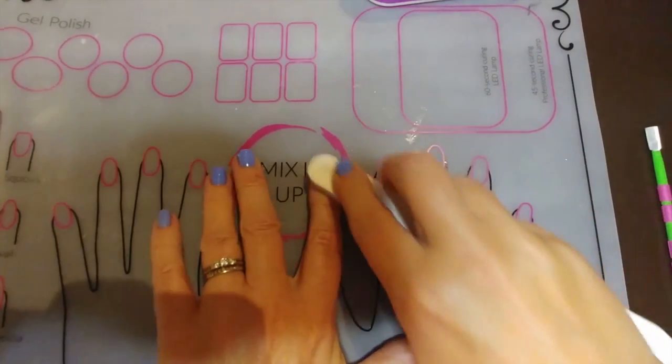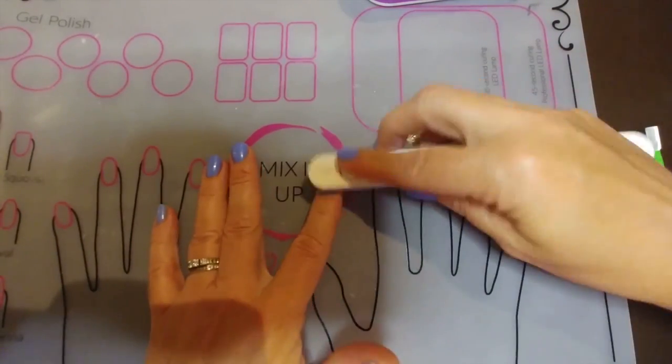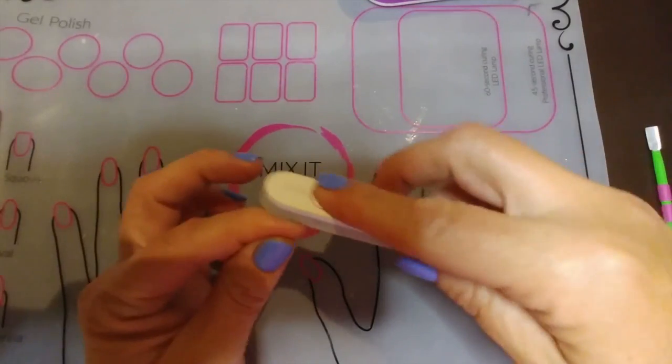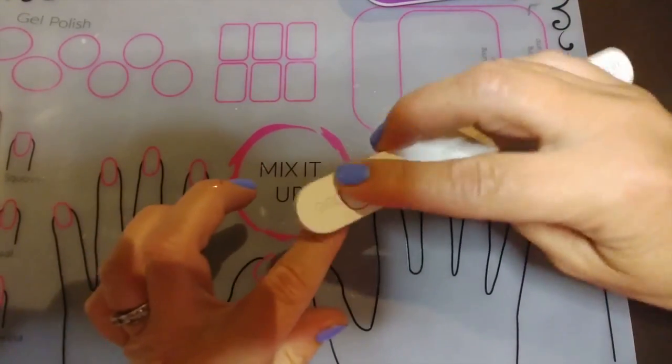You just buff it like so, and by doing this you're just removing the shine.